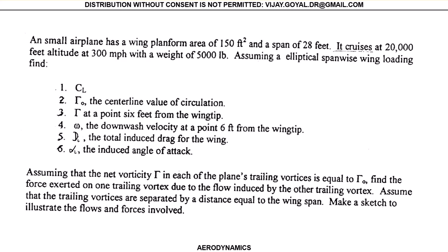In this example, let's see how all the theory for elliptical wing loading works. Consider a small plane with a wing platform area S and a span of 28 feet (this is your b). It cruises at an altitude of 20,000 feet at 300 miles per hour. Note that we need to convert this to feet per second.